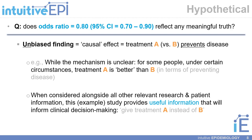Specifically, in the case where we can estimate an unbiased finding or a causal effect, we can say the following: while the mechanism is unclear, for some people, under certain circumstances, treatment A is indeed better than treatment B in terms of preventing disease. In other words, when considered alongside all other relevant research and patient information, this example study provides useful information that will inform clinical decision making — give treatment A instead of treatment B.